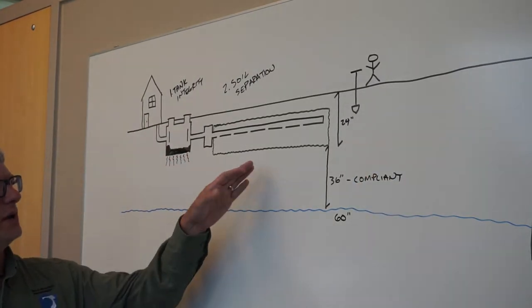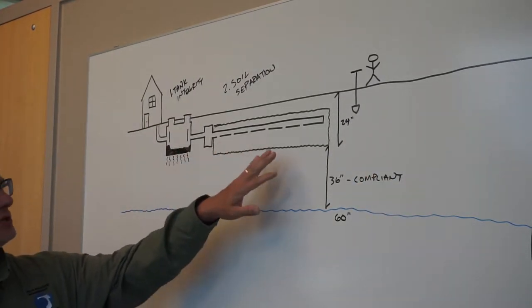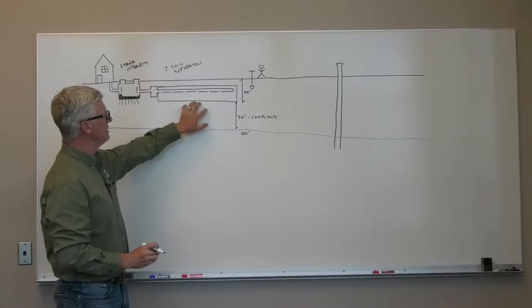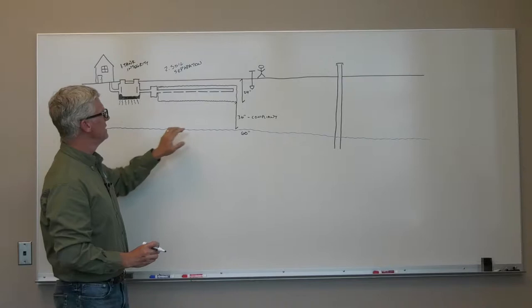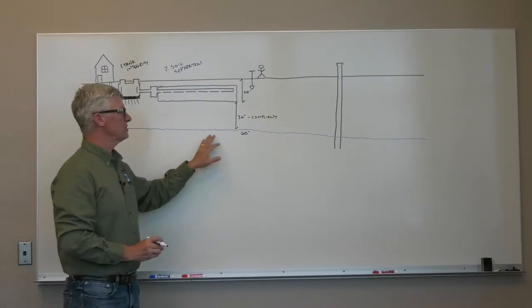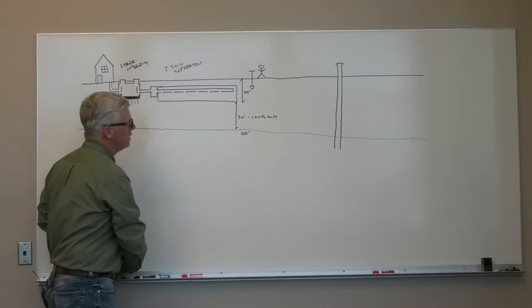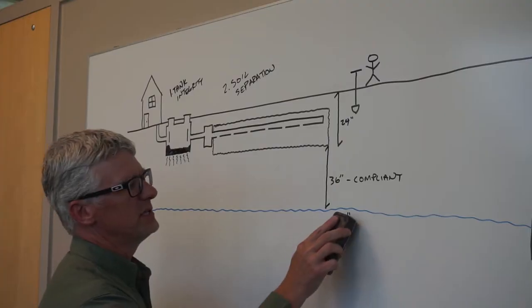Because all of the effluent from the septic tank that goes out to the drain field has enough distance between the system and the water table to get ample treatment before it gets discharged to the groundwater.